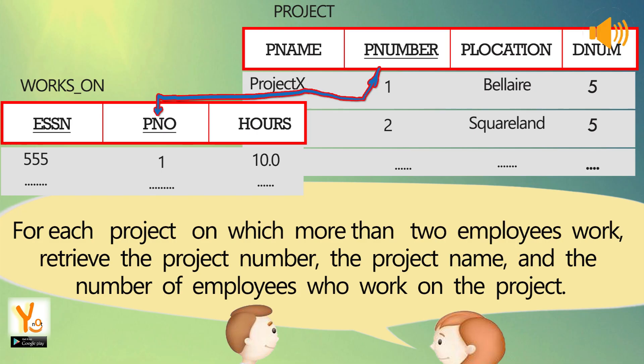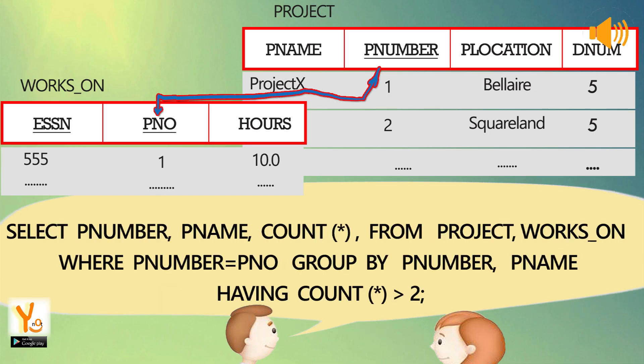For each project on which more than two employees work, retrieve the project number, the project name, and the number of employees who work on the project. SELECT Pnumber, Pname, COUNT(*) FROM project, works_on WHERE Pnumber = PNO GROUP BY Pnumber, Pname HAVING COUNT(*) > 2.